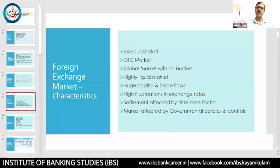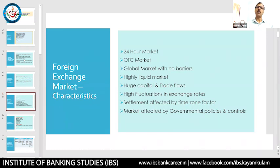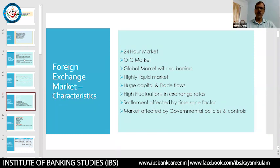Second feature: it is an OTC market — over-the-counter — meaning there is no specified location. Unlike a grocery or vegetable market where you go to a specific physical location, in the forex market there is no fixed space. If you have a computer, laptop, or mobile with internet, you can do transactions and communicate with any person in the globe. Third: it is a global market with no barriers — the entire globe is treated as a single entity and there is no barrier to transact with anyone.